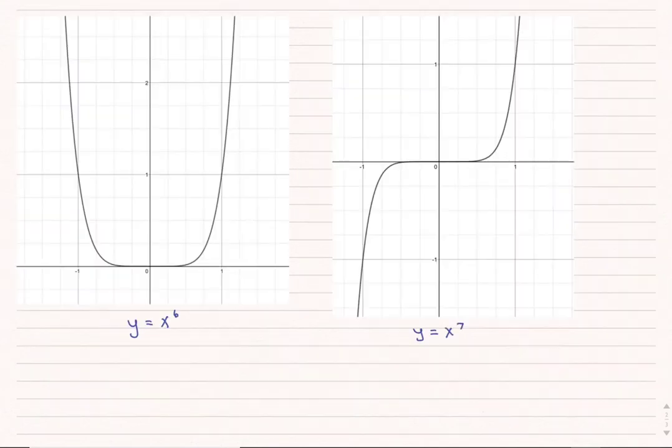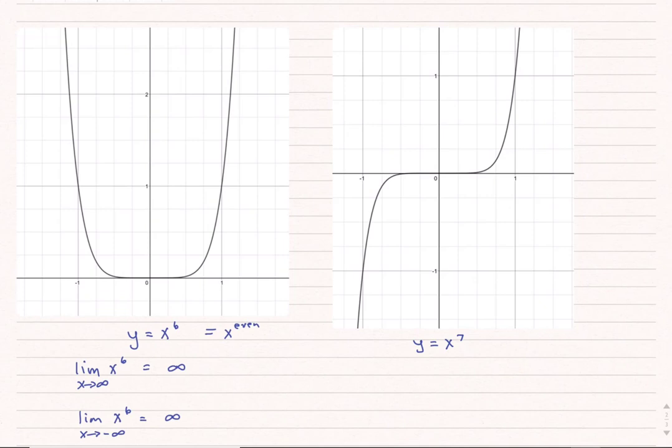It doesn't always work out that there is a finite limit as x goes to positive or negative infinity. For y equals x to the 6th — and any even power behaves similarly — as x approaches positive infinity, it goes to infinity, and as x approaches negative infinity, it still goes to positive infinity. For x to the 7th, as x approaches positive infinity it goes to infinity, but as x approaches negative infinity, the limit equals negative infinity.